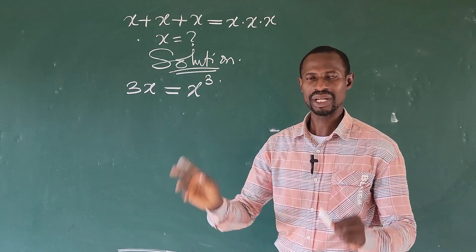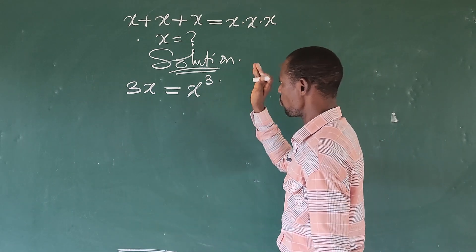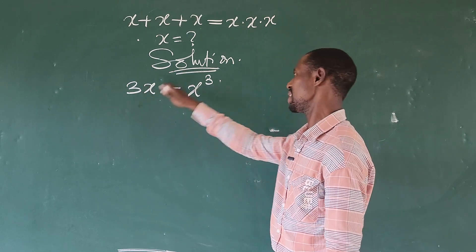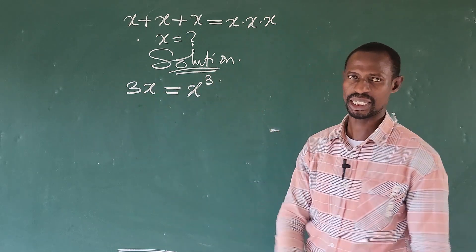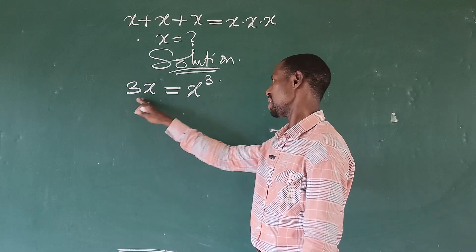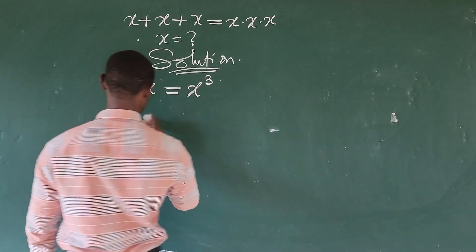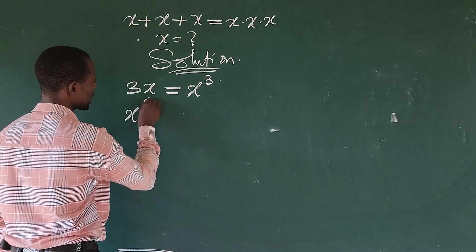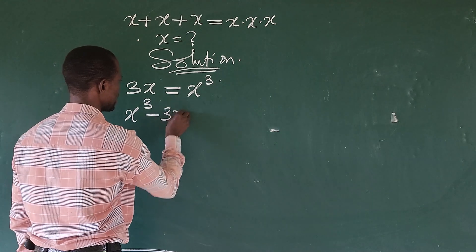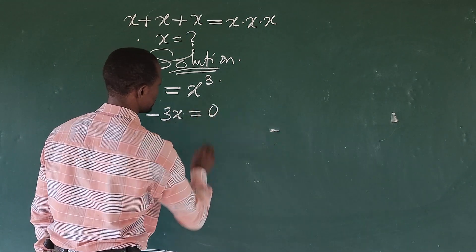So for us to get the 3 roots completely, we have to move this quantity to the other side. So rearranging, it is going to give us x to the power of 3 minus 3x, and this is equal to 0.